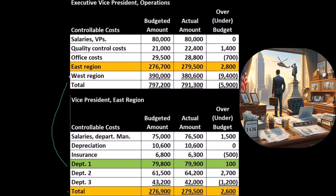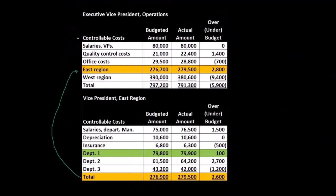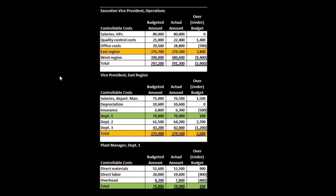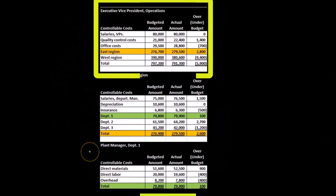If we were in charge of the East, we would have our detailed report — sum that up — and that's going to be part of the reporting to the executive vice president of operations, as well as the West. The salaries and VPs, the quality control costs, and the office costs are going to be included as controllable costs for the executive vice president of operations. So if you see it all in one, you can see this is from top to bottom or bottom to top.